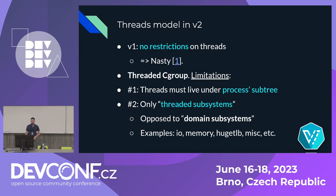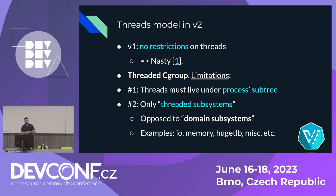Let's talk specifically about the threads model in cgroups v2. In v1 there were no restrictions on threads — you could do whatever you want with them, and the official kernel documentation actually called it 'nasty.' In v2 there are two important limitations: first, threads must live under their process subtree — you can't take two threads of a process and split them between different groups. Second, if your cgroup is threaded, you can only use threaded subsystems, which means you cannot use many subsystems — a huge limitation.